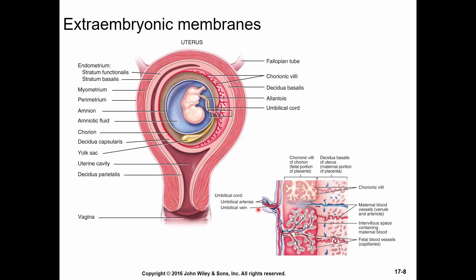Notice that the umbilical arteries are blue and the umbilical vein is red. We name arteries and veins based on where they're going: the arteries go from the fetus to the placenta but carry venous blood, while the vein goes from the placenta back to the fetus carrying oxygenated blood — similar to the pulmonary system. By nine weeks you would call it a fetus; all the organ systems have been laid down.